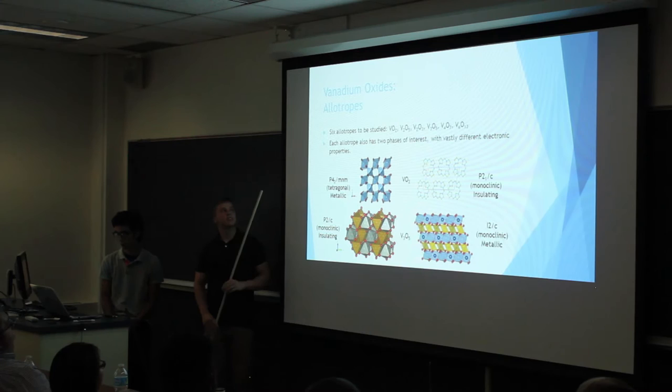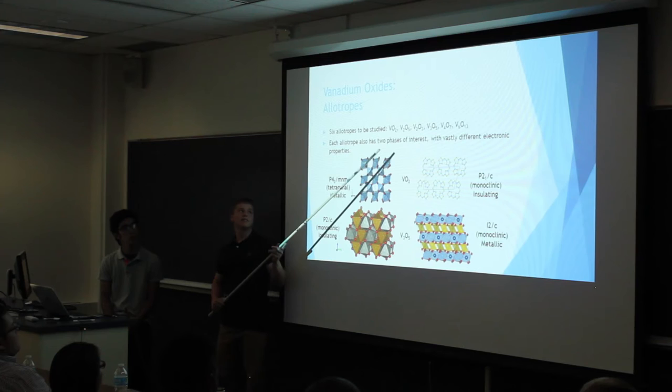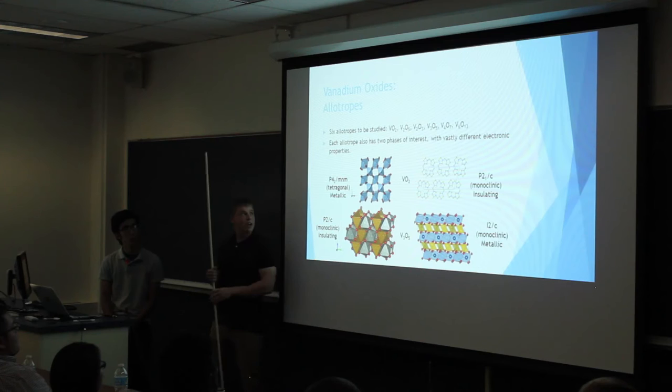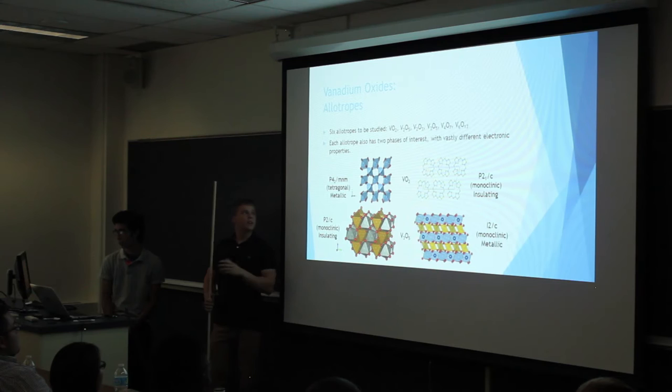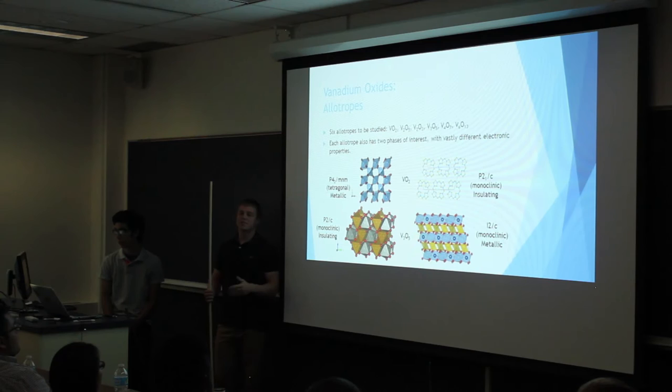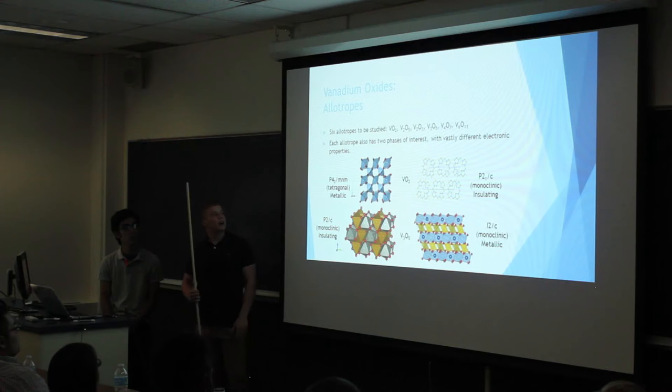There are actually many different allotropes of vanadium oxide, but I'm going to be focusing on six of these: VO2, V2O5, V2O3, V3O5, V4O7, and V6O13. Each allotrope also has two phases of interest — one being metallic and one being insulating. So I'm actually going to be studying twelve phases of the materials in total. The reason I chose these six specifically was because they're the ones that had the most experimental interest while still having some theory unexplored.